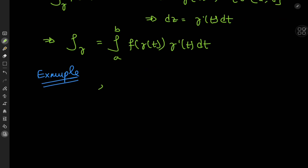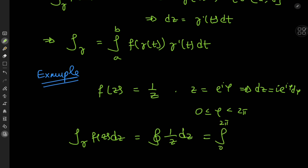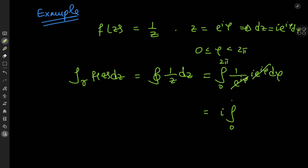As a nice example, consider integrating f(z) = 1/z on the unit circle centered at the origin. Here z is parameterized by e^(iφ), where φ lies between 0 and 2π. In this case dz = i·e^(iφ) dφ. So the integral over the closed unit circle contour of 1/z dz becomes the integral from 0 to 2π of (1/e^(iφ)) · i·e^(iφ) dφ. We see cancellation, and we're left with i times the integral from 0 to 2π of dφ, which gives us 2πi. So the integral over the unit circle of 1/z dz equals 2πi.